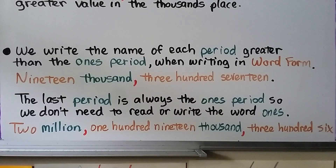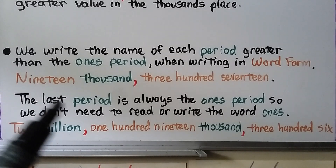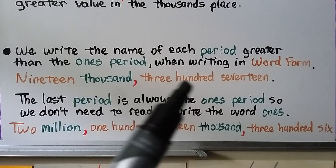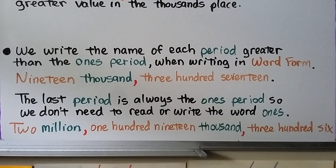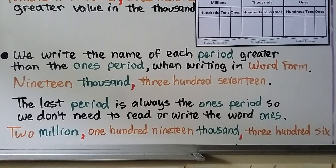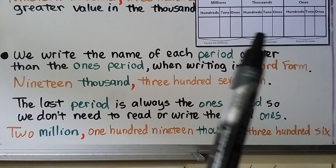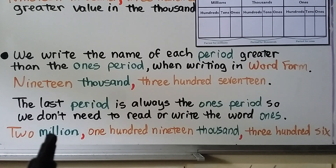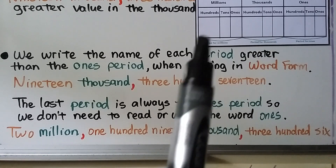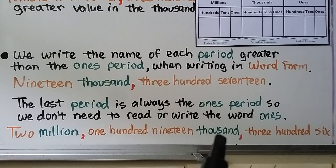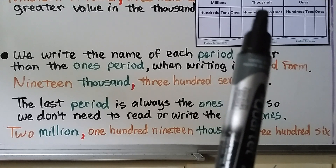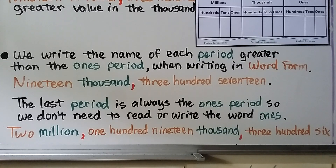We write the name of each period greater than the ones period when writing in word form. For 19,317 we write 'nineteen thousand, 317.' The last period is always the ones period, so we don't need to write the word 'ones.' When we're in the thousands period, we write the word 'thousands.' For a number like 2,119,306, we write 'two million, one hundred nineteen thousand, three hundred six.' We don't say '306 ones.'